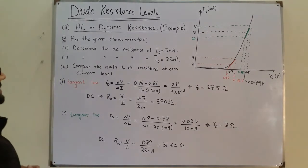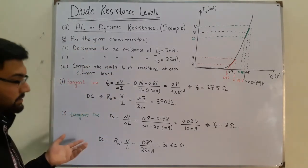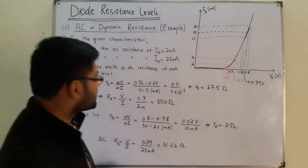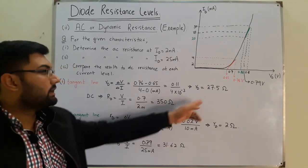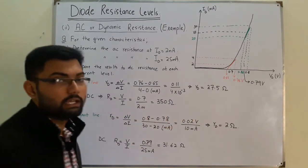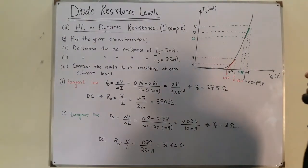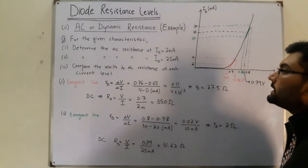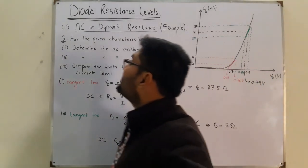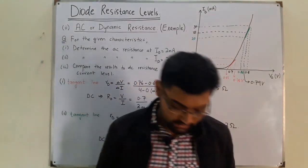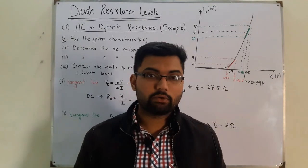Again we have a notable difference, so you need to keep in mind what is asked — if the DC resistance is asked and you find the AC resistance, you'll get the wrong answer. Have a look: we have a difference of 2 and 31.62 ohms versus 27.5 and 350 ohms, so be very careful. This was a small example on AC or dynamic resistance. See you in the next lecture on average AC resistance — till then take care of yourself and everyone around you. Goodbye.